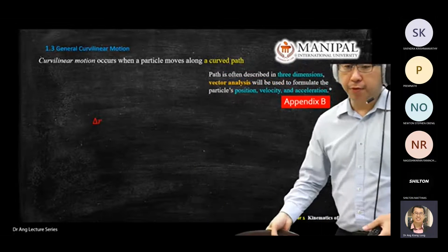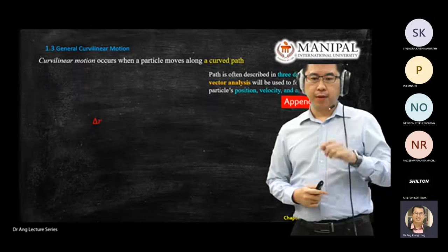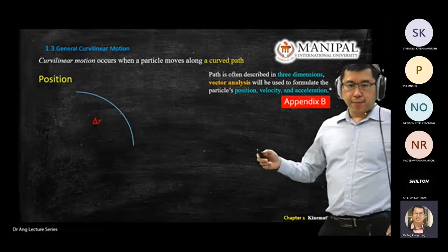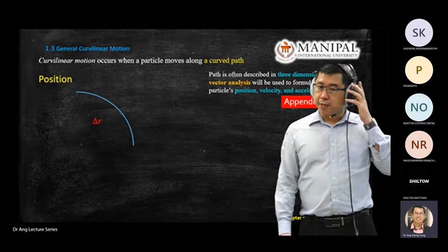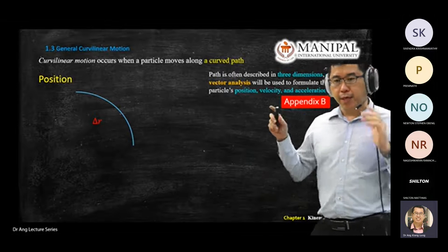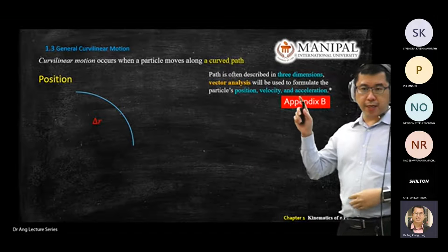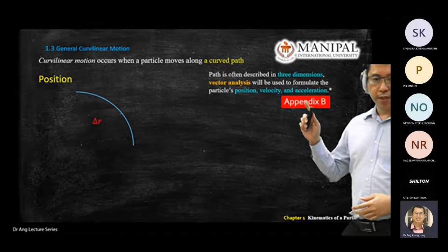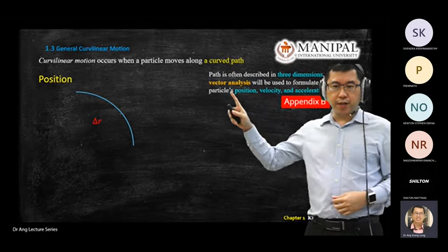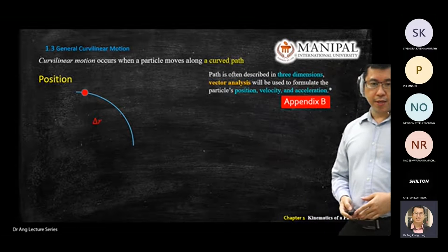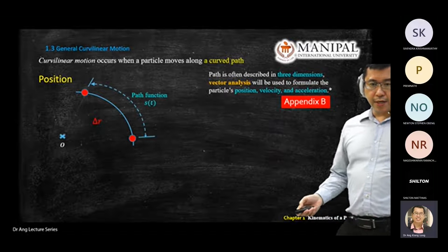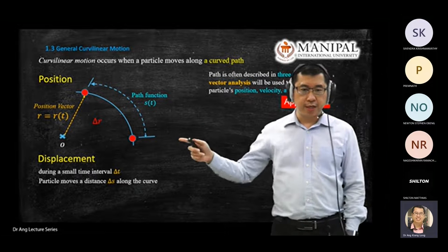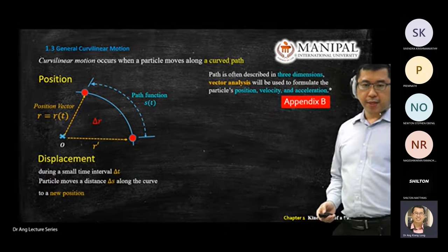Let's review some of the concepts that we learned previously — just a recap because we're going to use all these in one of the examples for today. There's already an appendix B in the themes folder to refresh on vector analysis. We've gone through a few concepts about position, displacement, and velocity.